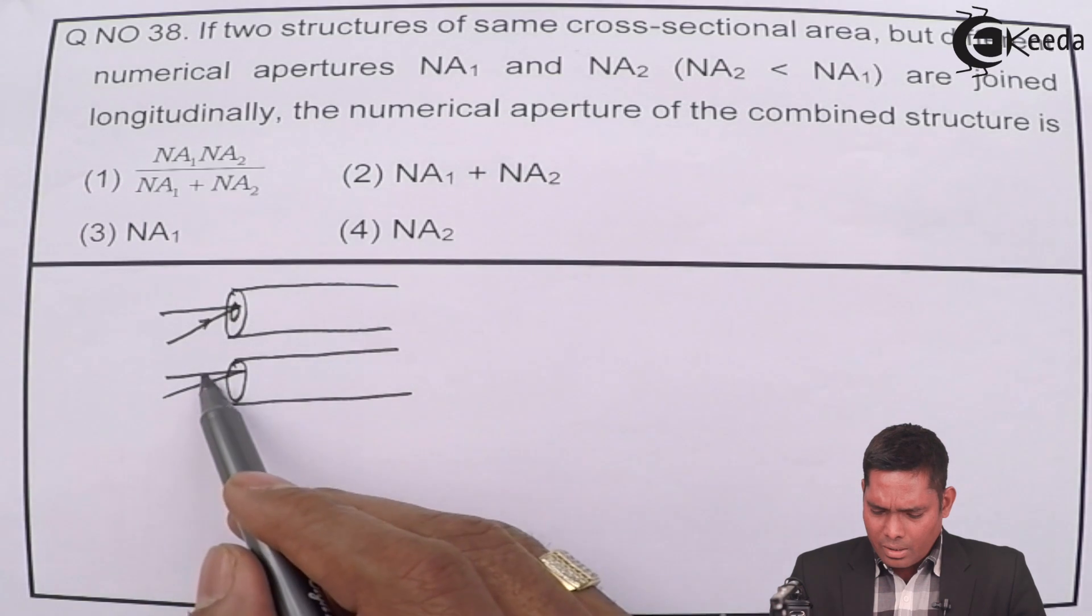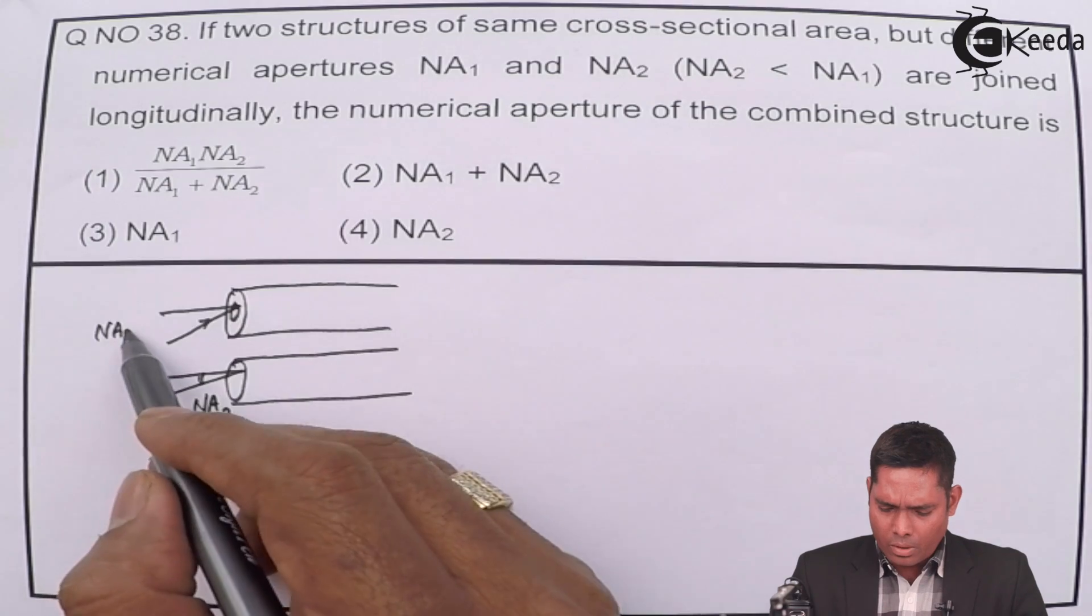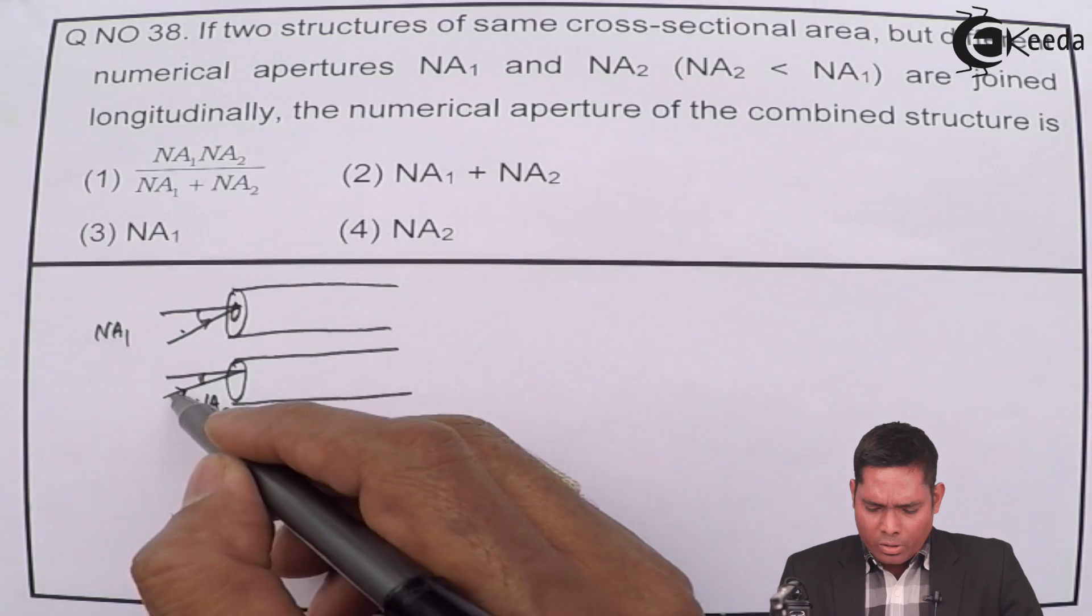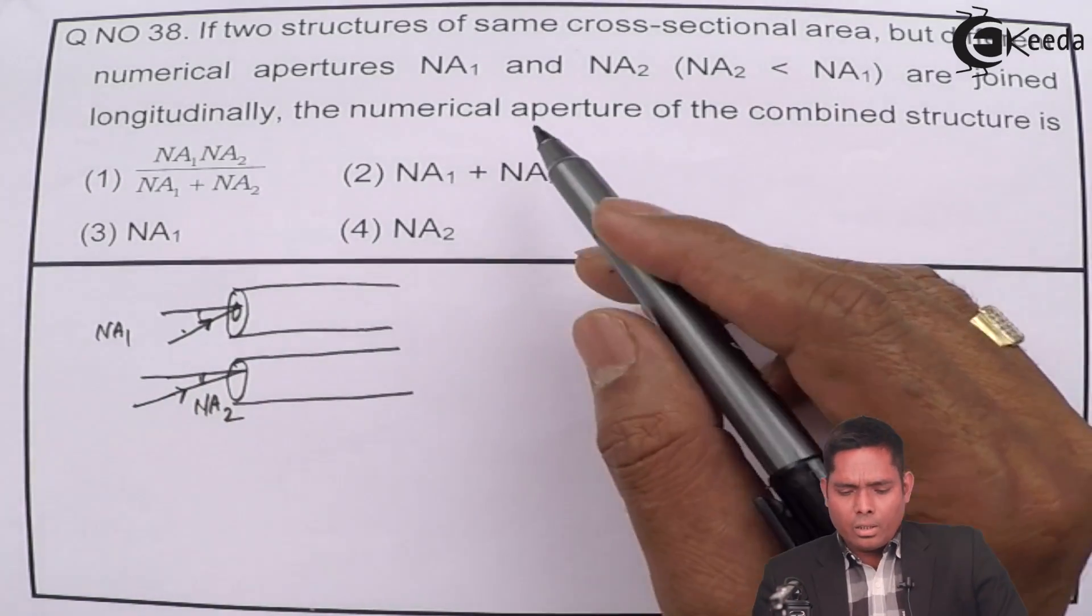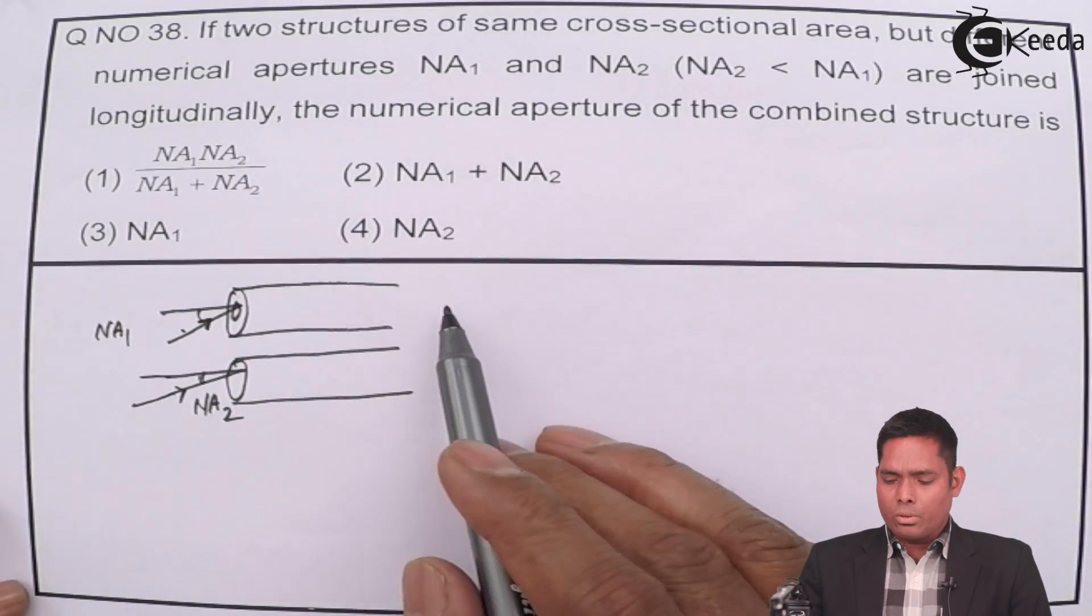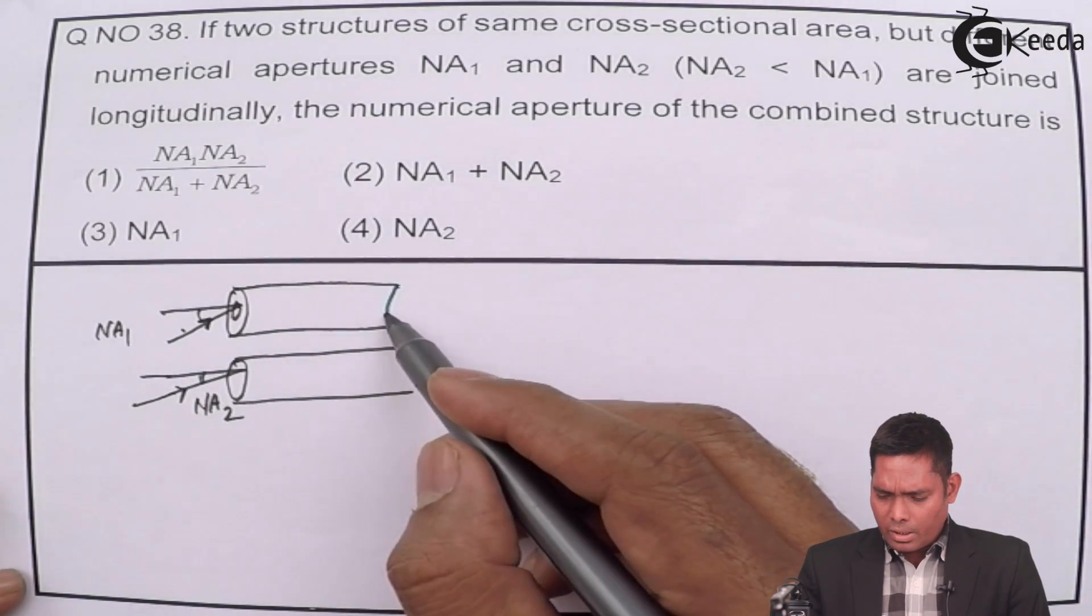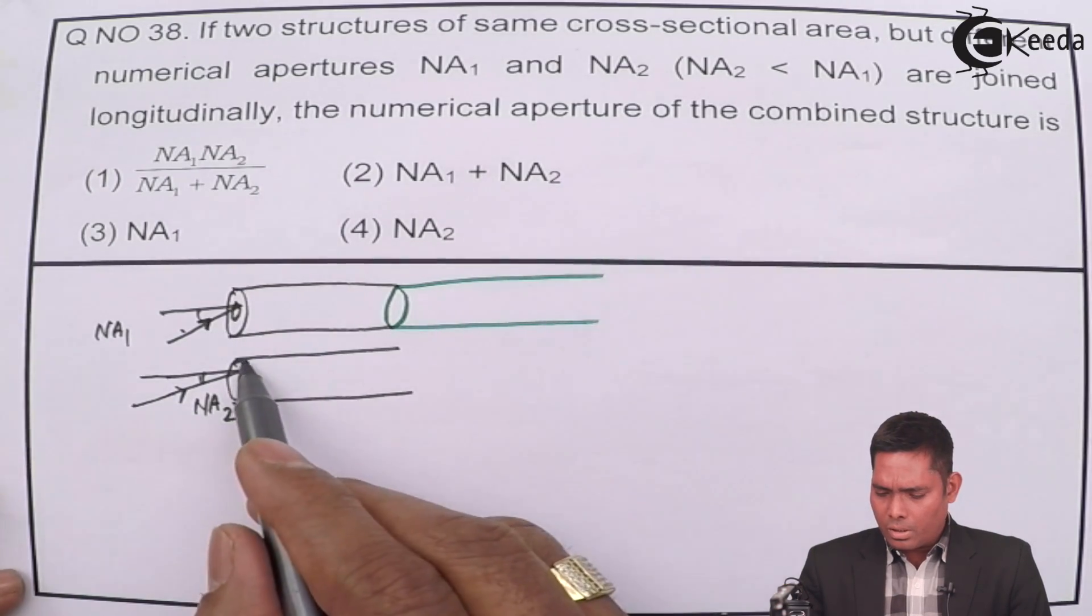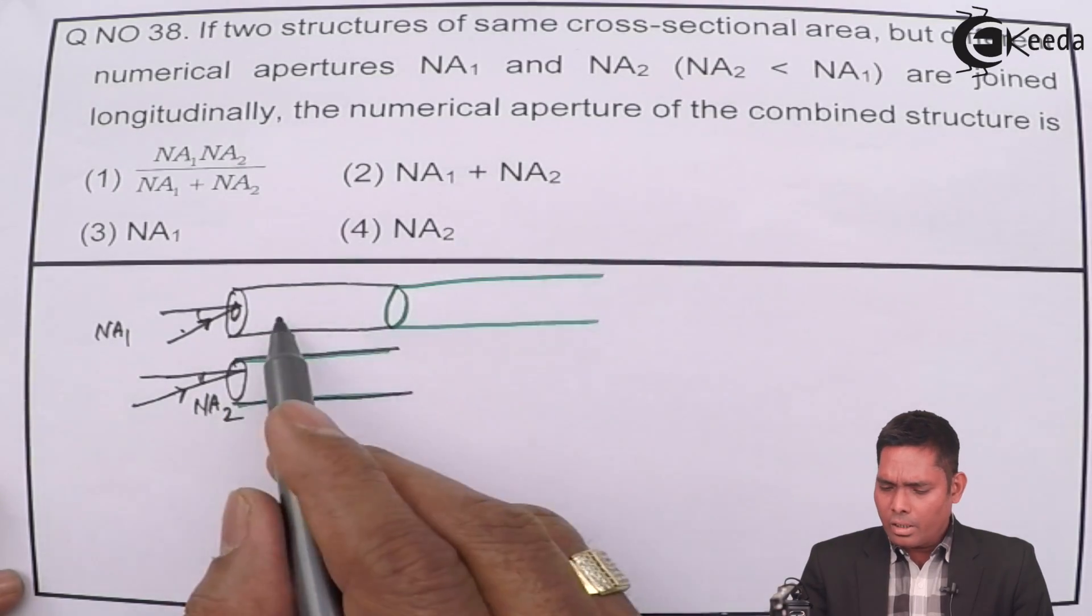So here NA2 and here it is NA1. When it is the case or join longitudinally, one after another along the length you have to join. That means this one is joined here, suppose this is the second one, how it is joined here longitudinally along the length.